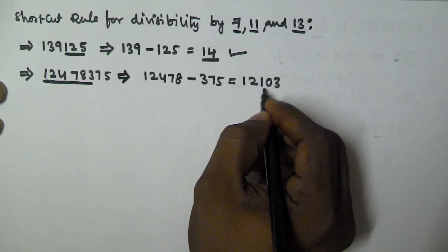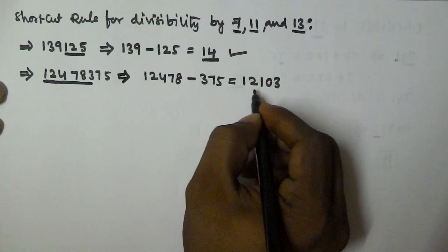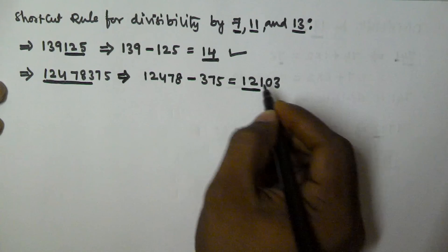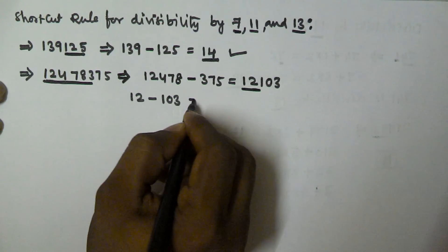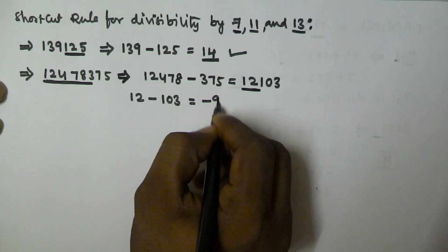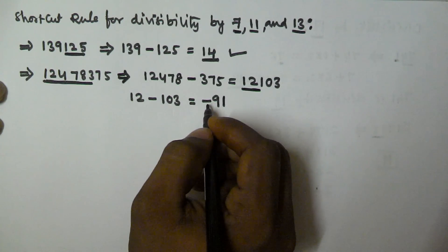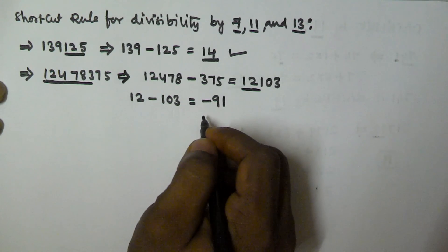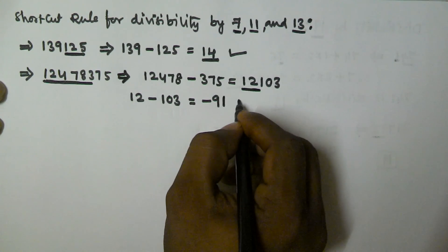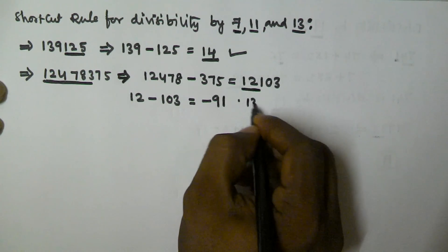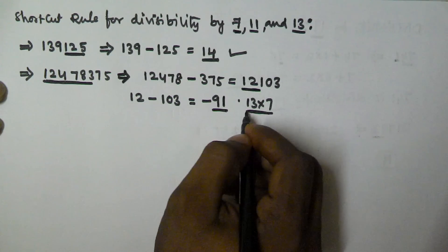Again, we do not know if 12103 is divisible by 13 or not, so we repeat the same process. We take all the digits except the last three, that is 12, then 12 minus 103. We get minus 91. Now, 91 is divisible by 13, since 13 times 7 is 91. So that means 91 is divisible by 13.